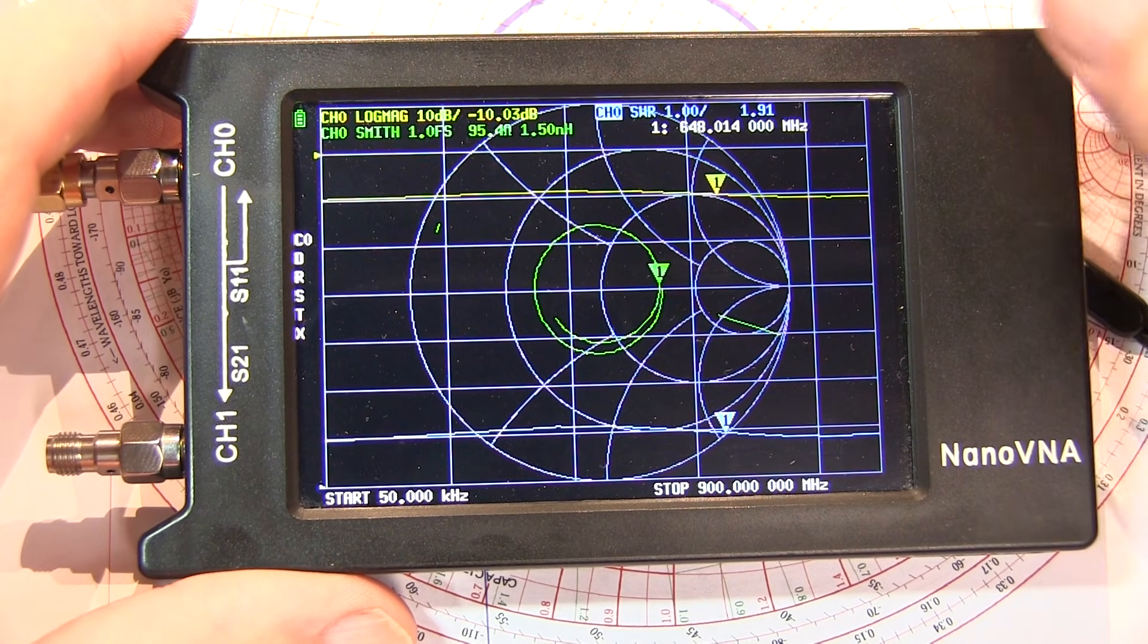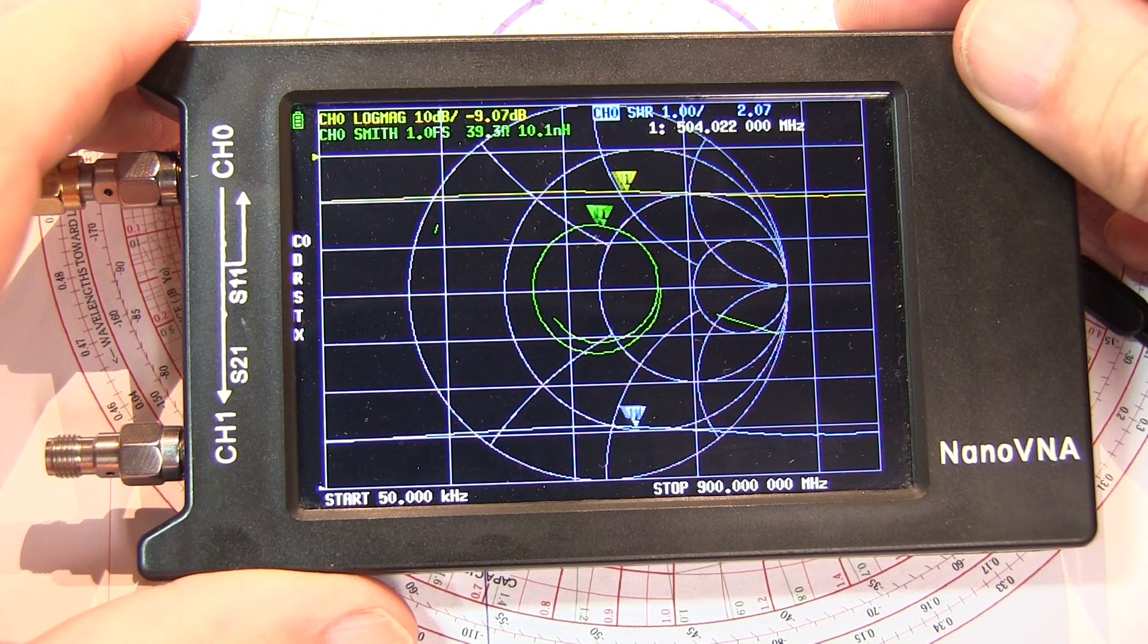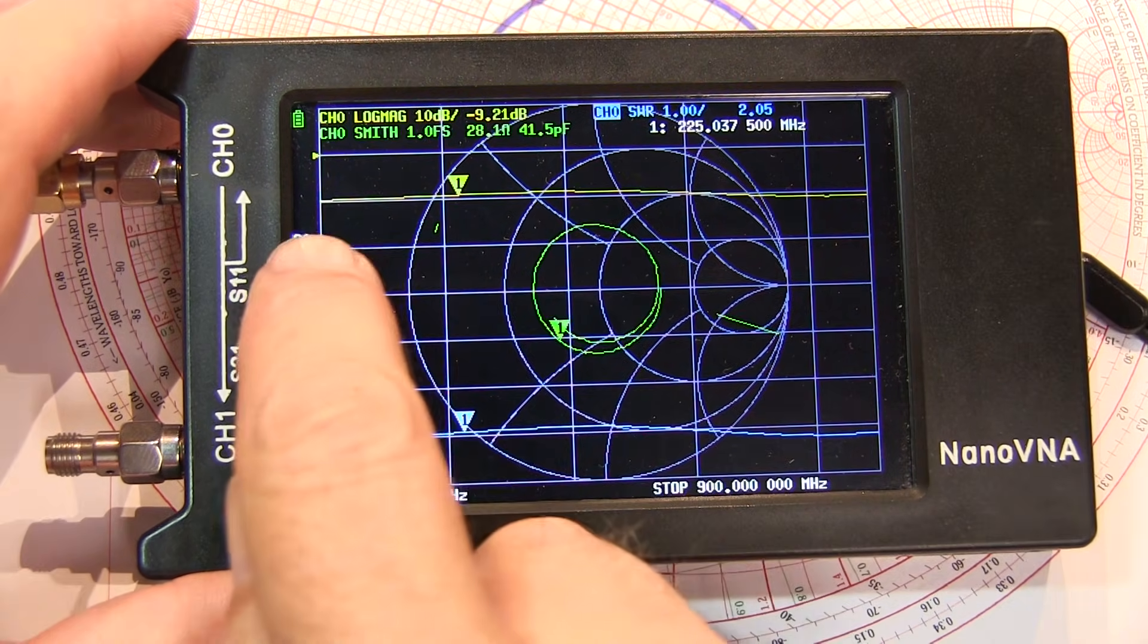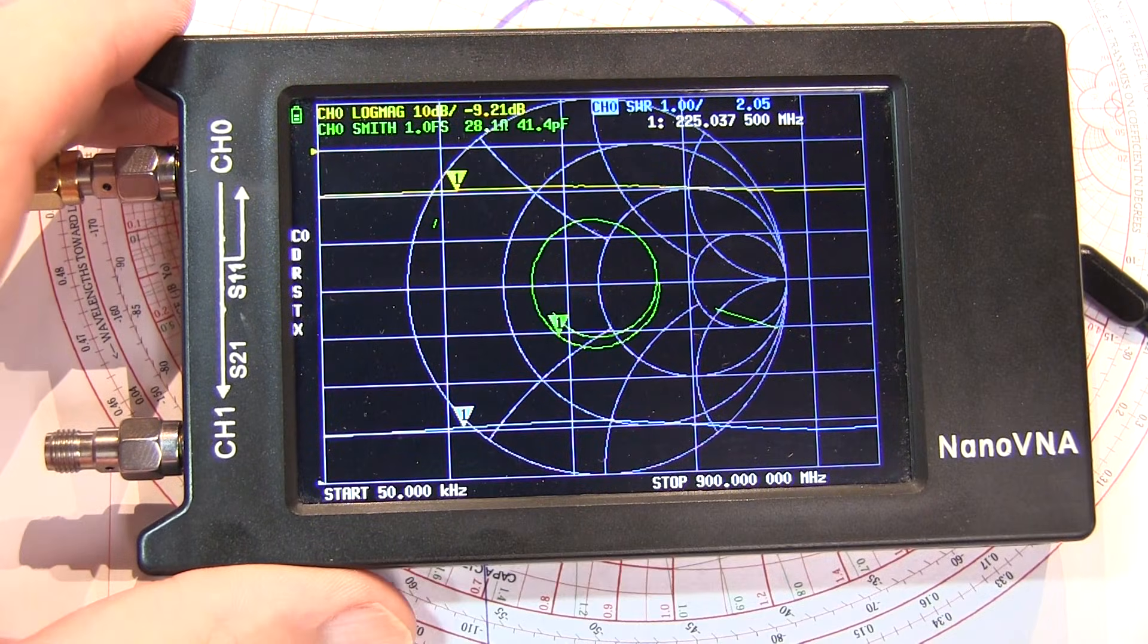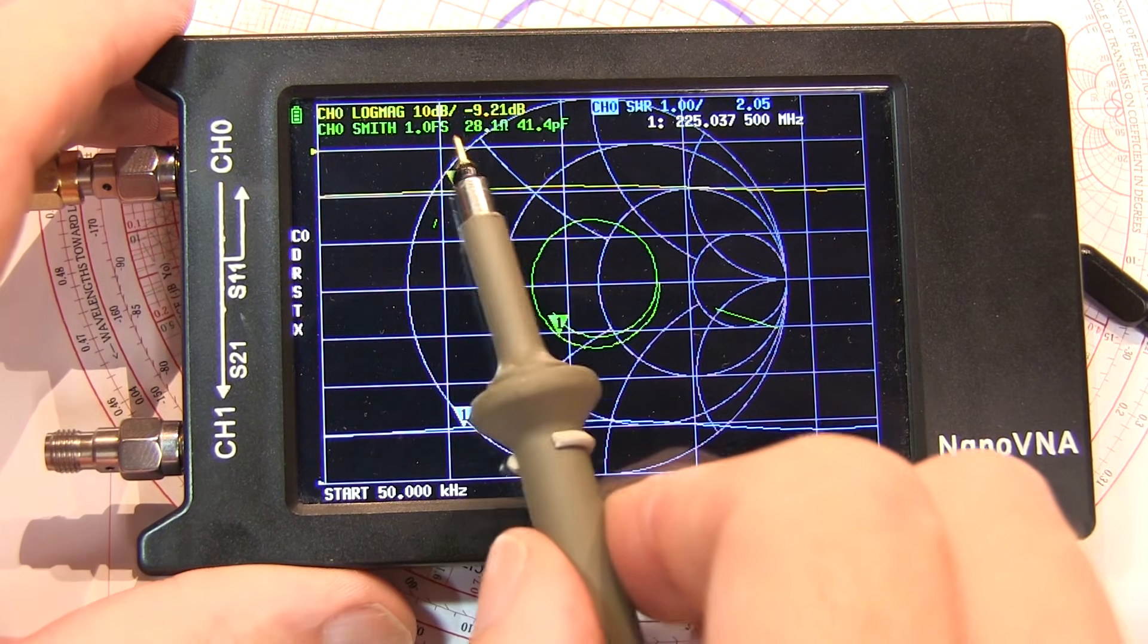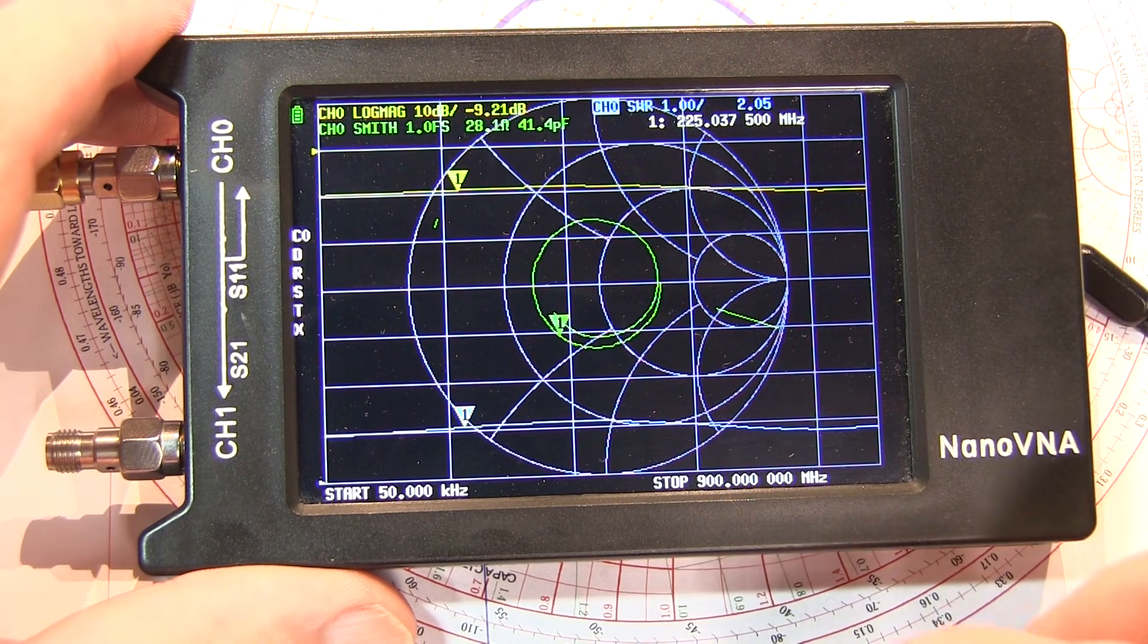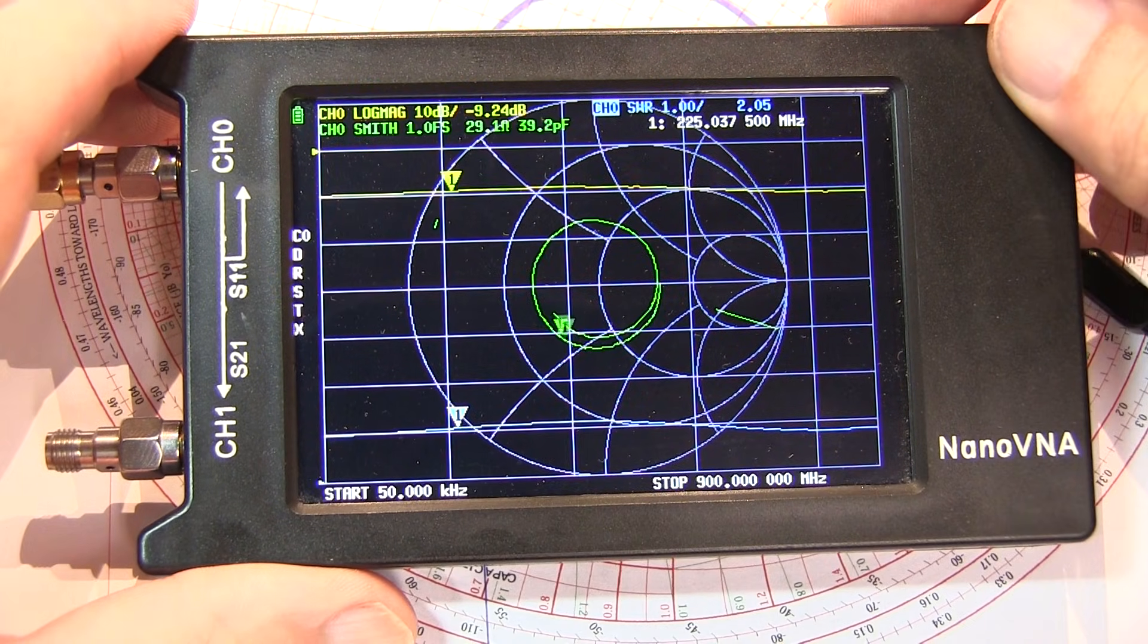Now the other important thing to note, anywhere along this line or with any of these different lengths across the line, in terms of wavelengths across the line, our return loss or reflection coefficient is virtually flat, and the SWR is virtually flat at around 2-to-1. So this reinforces what I mentioned earlier, that regardless of line length, the SWR does not change.